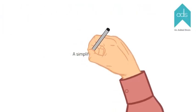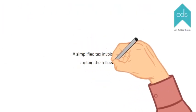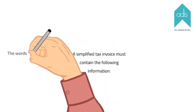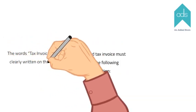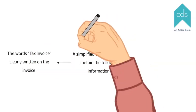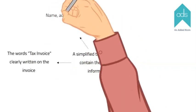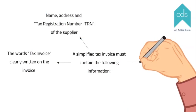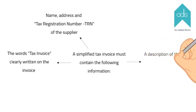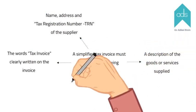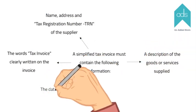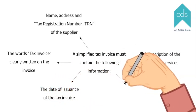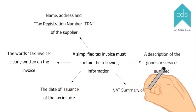A simplified tax invoice must contain the following information. The words 'tax invoice' should be clearly written on the invoice. It should include the name, address, and tax registration number of the supplier. A description of the goods or services supplied should be provided. The date of issuance of the tax invoice must be mentioned.